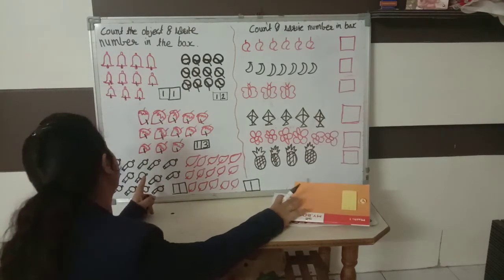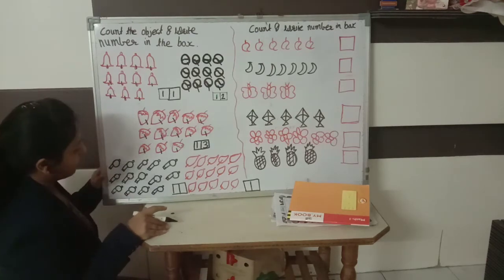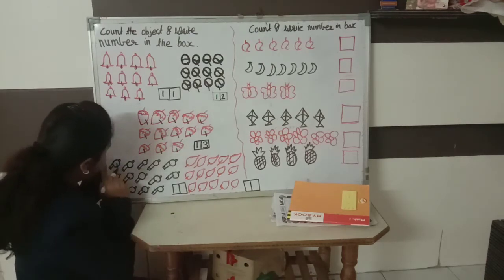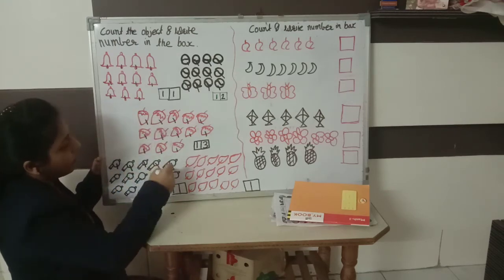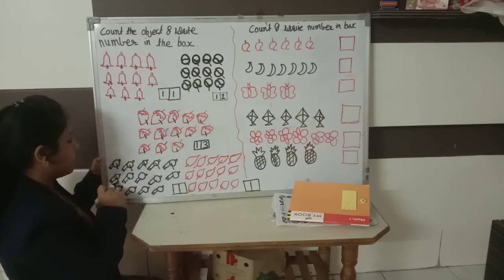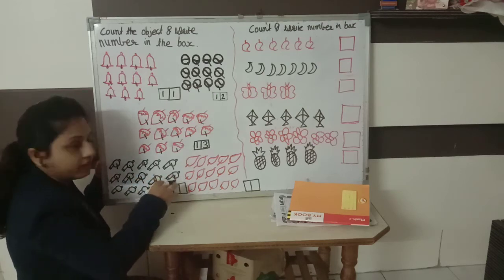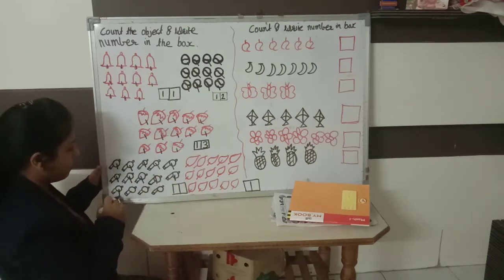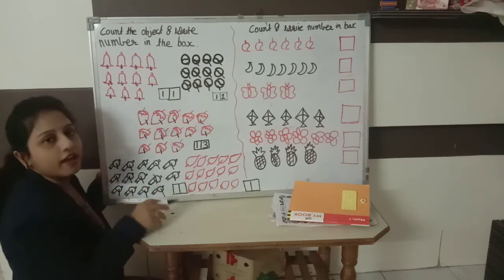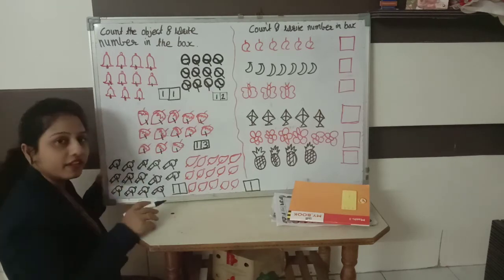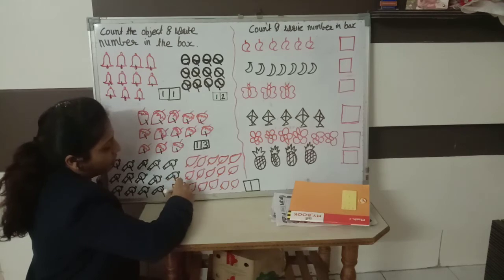Now we are going to count whistle. What is this? Whistle. Let's count. How many whistles are here? 1, 2, 3, 4, 5, 6, 7, 8, then 9 and 10, after 11, 12, 13 and 14. How many whistles? 14.